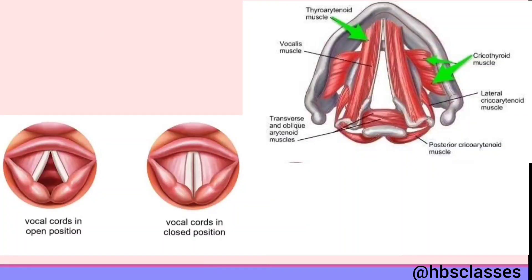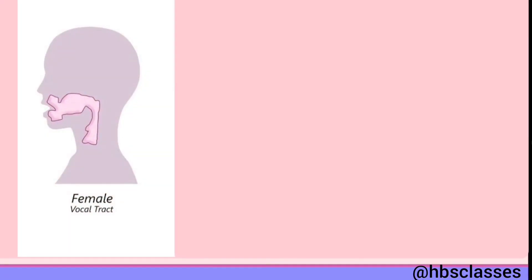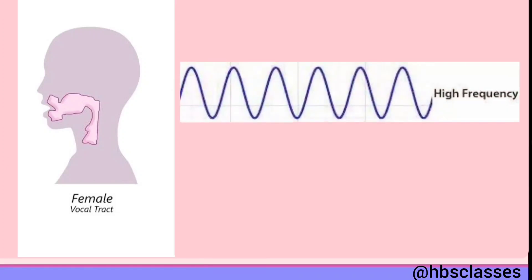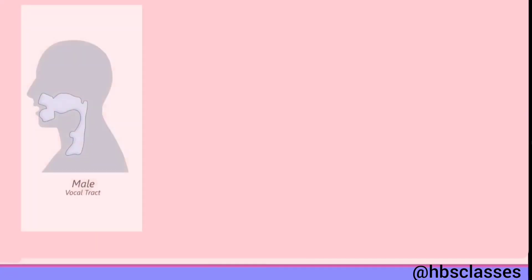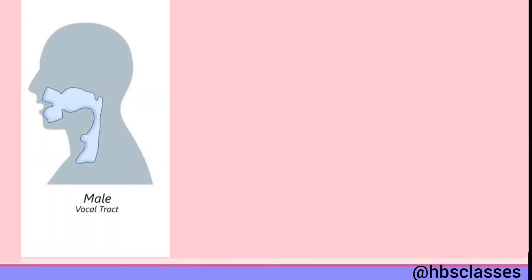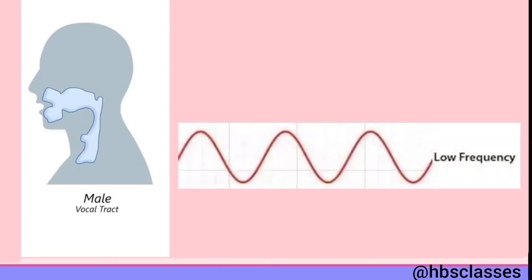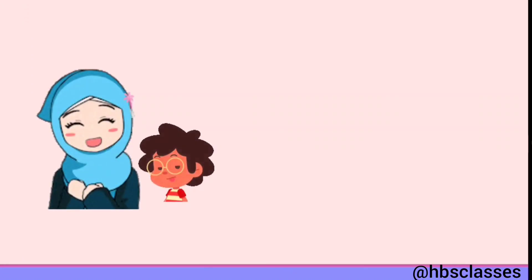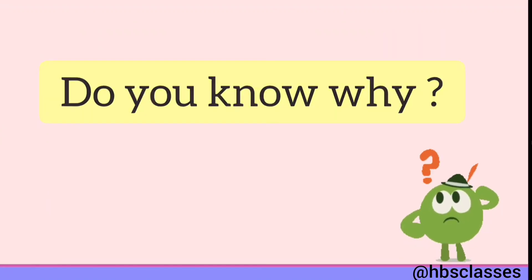Muscles attached to the vocal cords can make the cords tight or loose. When the vocal cords are tight and thin, the sound produced is of a higher pitch or frequency. On the other hand, when the cords are loose and thick, the sound produced is of lower pitch or lower frequency. The frequency of sound produced by women and children is higher than that produced by men.